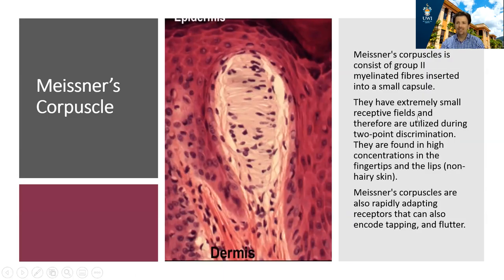This is the Meissner's corpuscle. This, too, is a group 2 myelinated fiber, and it is also inserted into a capsule. The difference is that the capsule in Meissner's is much, much smaller than what you find in the Pacinian corpuscle. The end result is Meissner's corpuscles have very small receptive fields, and that means they are very useful for detecting fine touch. Meissner's corpuscles are very important for two-point discrimination — they can be used to distinguish between two points being applied to the skin.